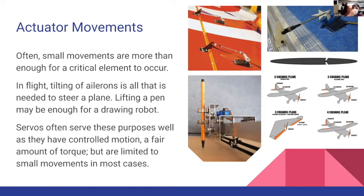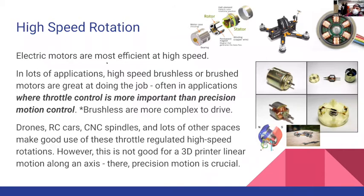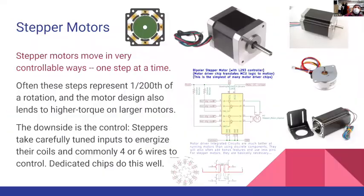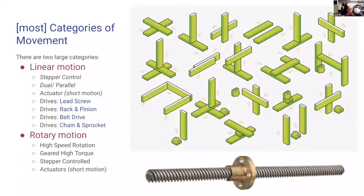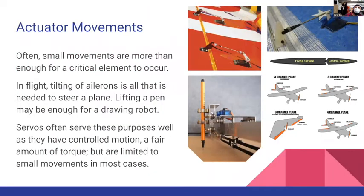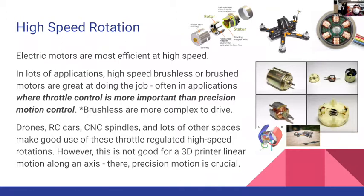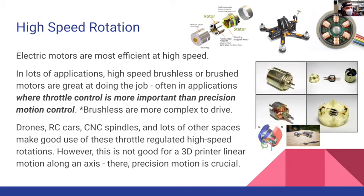Those are all examples with a servo. Coming back to our list of linear and rotary motion — rotational or rotary motion is another important thing. Motors are fundamentally most efficient at high speed because they have a spinniness to them. There are lots of applications where high speed is what you want: a spindle on a CNC, drive wheels on a little RC car, or propellers on a drone. Low torque, high speed is when a motor is at its most efficient.